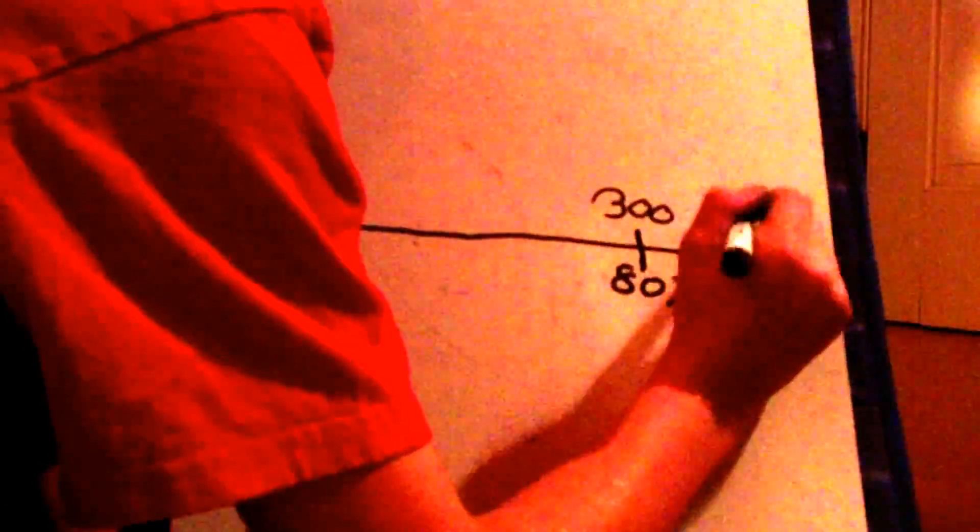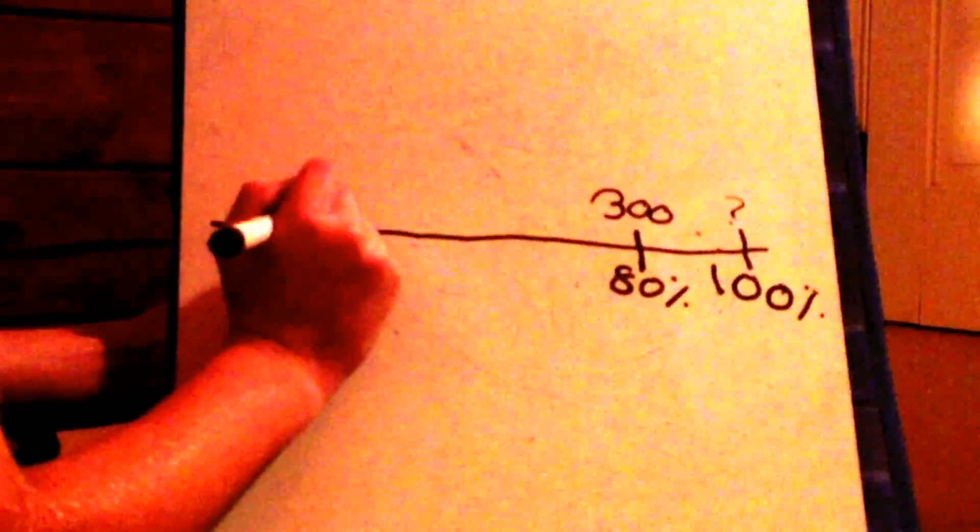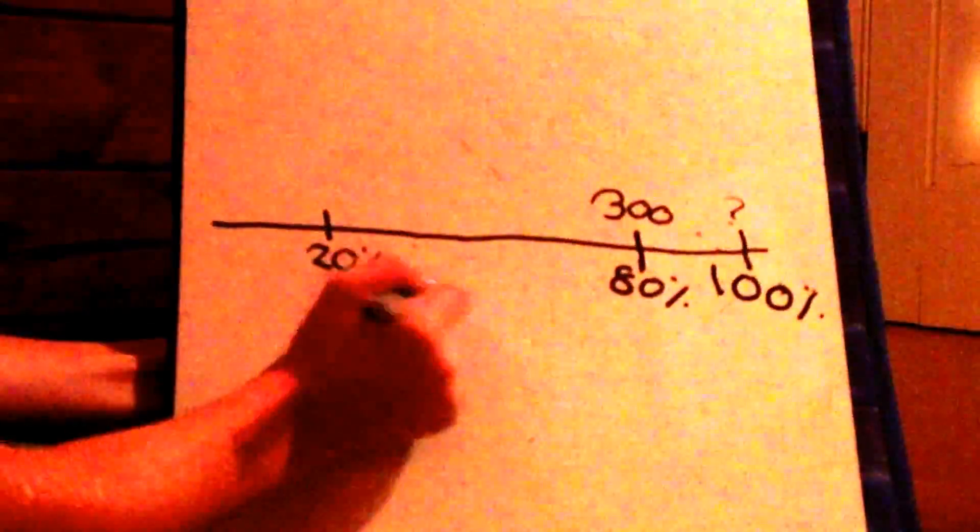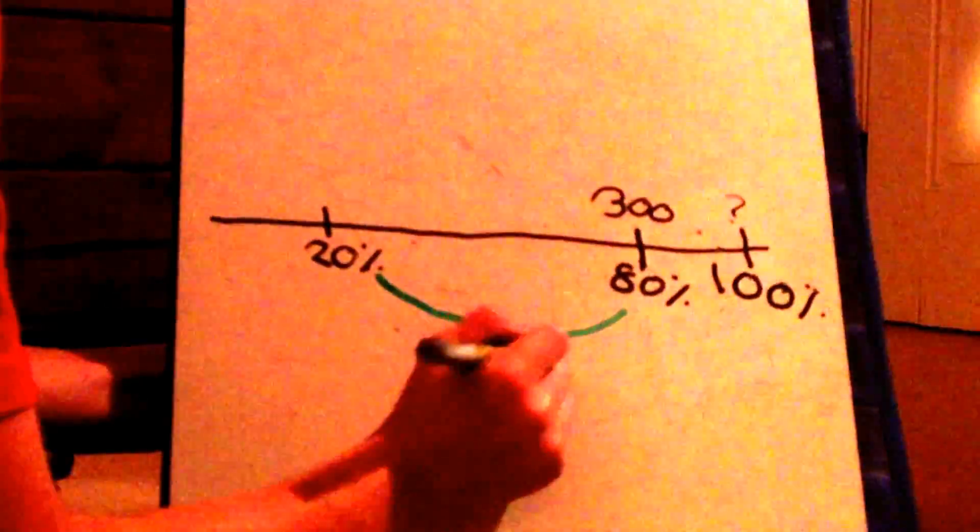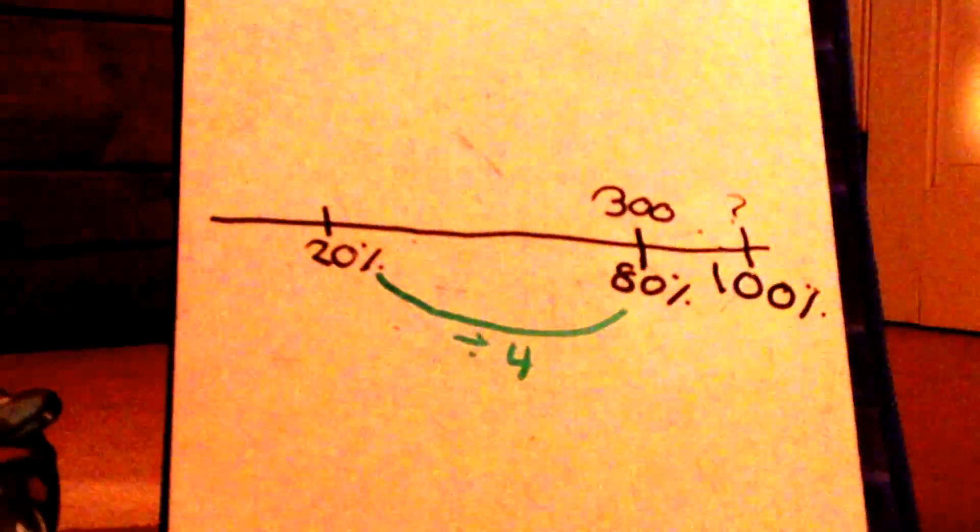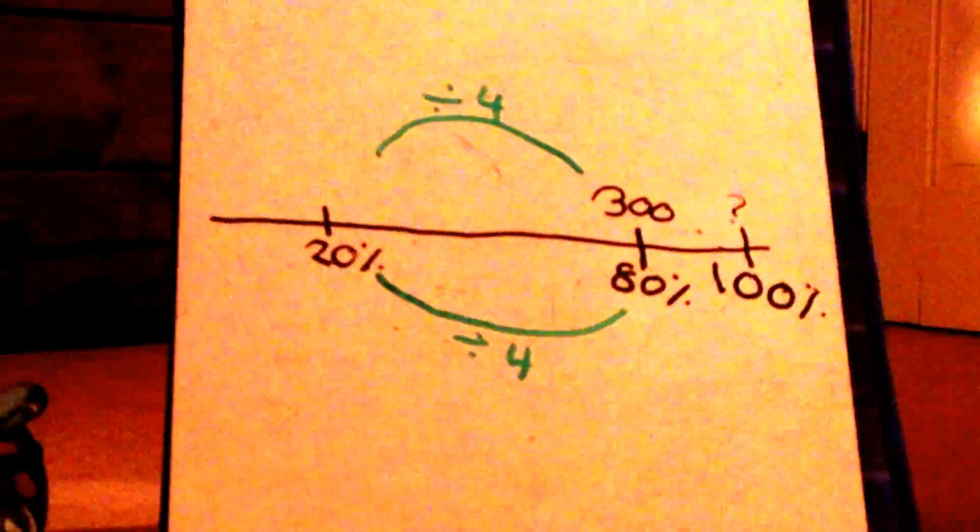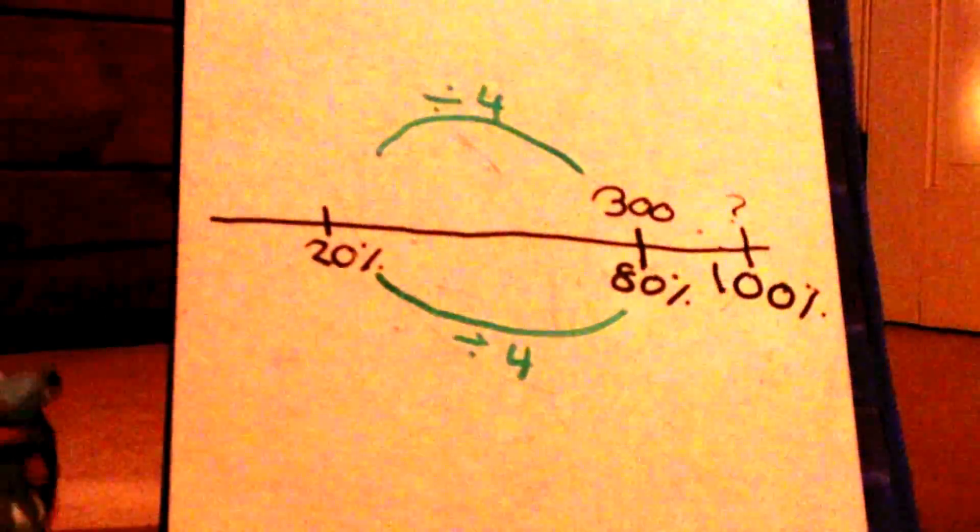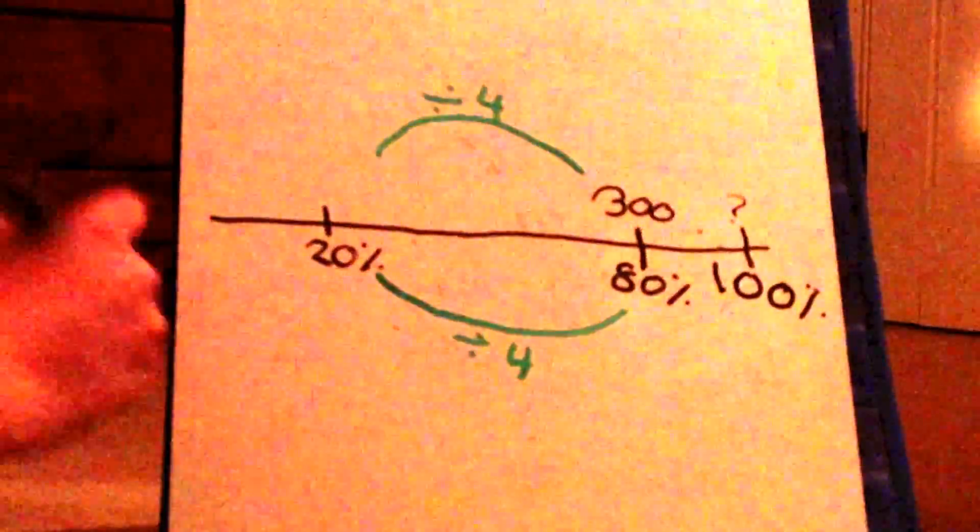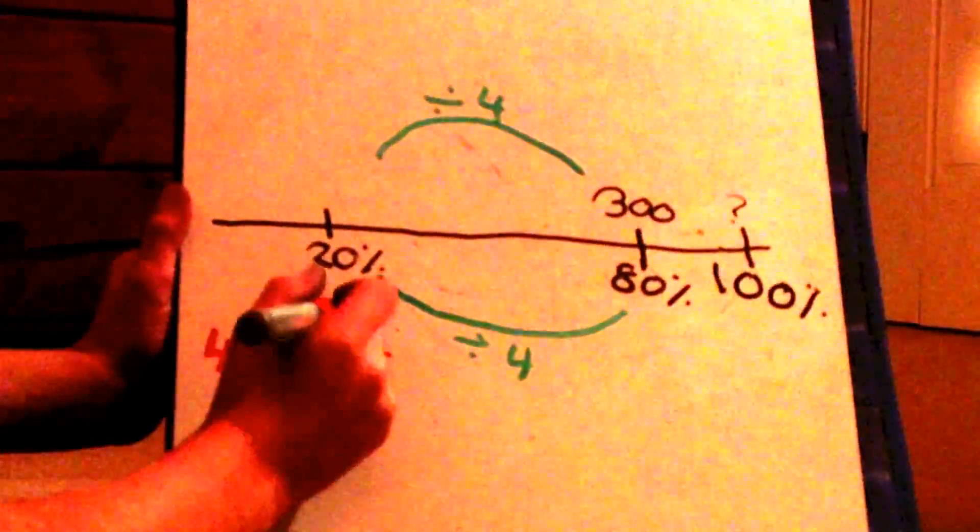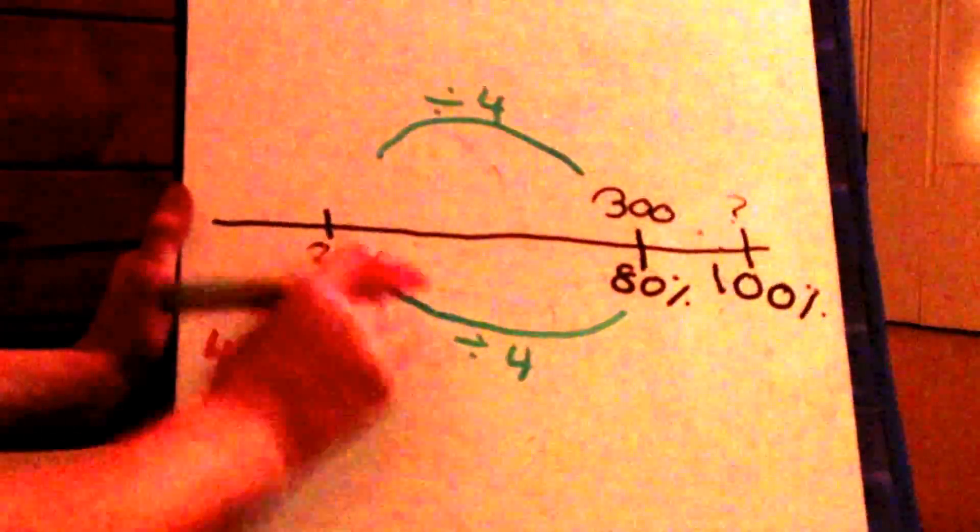Now, 100 can't be divided by anything to get 80%. It can't be divided by any whole numbers to get 80%. So we're going to have to find a smaller percentage, which is 20% in this case. So 80 divided by 4 is 20%. So remember, we always have to divide the top number by the same divisor. So 300 divided by 4 is 75, and I just did it out to show you.